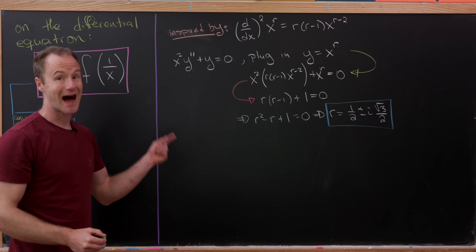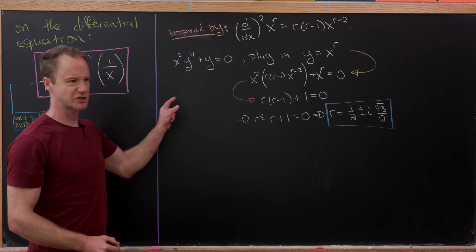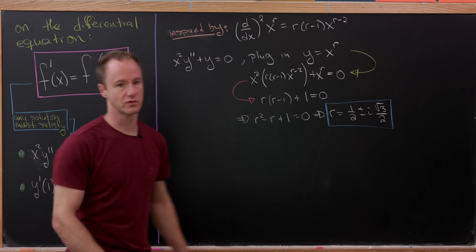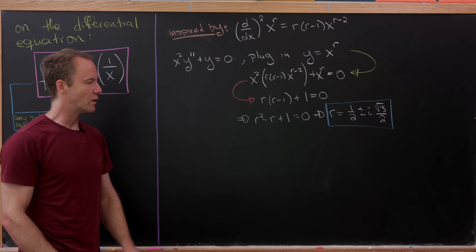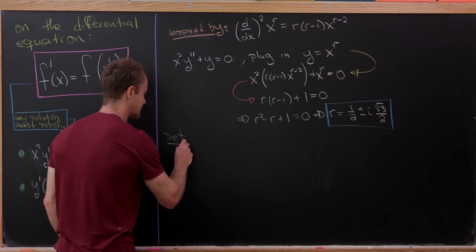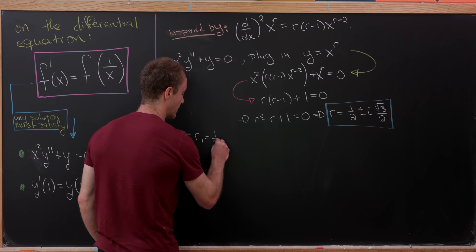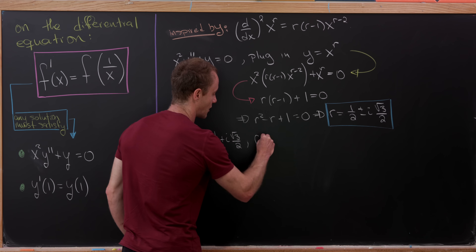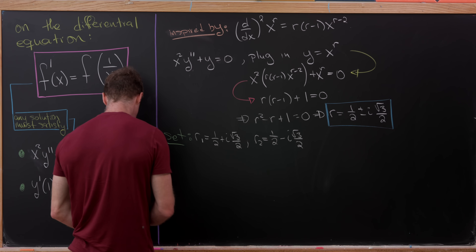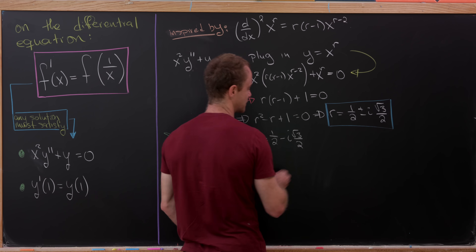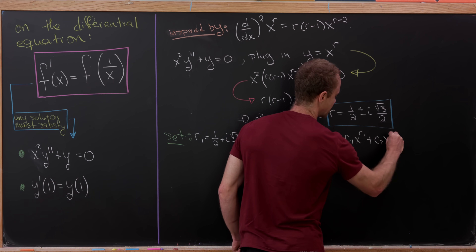If r equals either of those complex numbers, then x to the r satisfies the differential equation, putting us on track to solve our original equation. But what does it mean to have an imaginary exponent — x to the i times something? Let's set r1 equal to one half plus i times root 3 over 2, and r2 equal to one half minus i times root 3 over 2. We expect our general solution to be c1 times x to the r1 plus c2 times x to the r2.